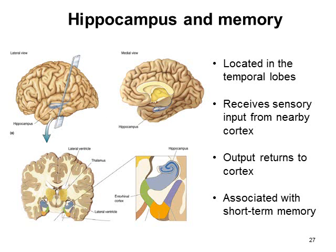Moving from the amygdala to the hippocampus: the hippocampus is located directly behind the amygdala, in the temporal lobes. On a lateral slice, you can see the lateral ventricle coming down, the hippocampus twisted round, and the thalamus either side at the top with the lateral ventricle directly above. The hippocampus receives sensory input from the local cortex and the output returns to the cortex. We believe the hippocampus is associated with short-term memory, although the actual mechanisms of how we learn and develop memory — both short- and long-term — are currently unknown.